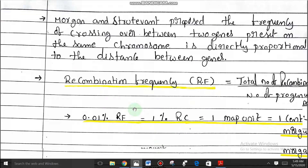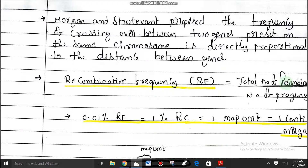The formula for recombination frequency: RF = total number of recombinants divided by number of progeny. For example, if in one crossing over there are ten progeny formed and the recombinants are five, then the recombination frequency is five divided by ten.